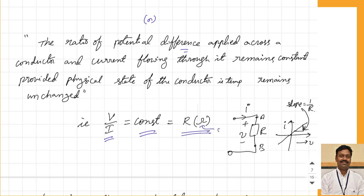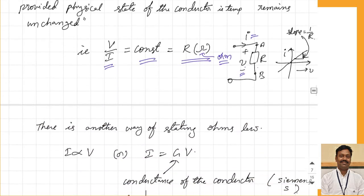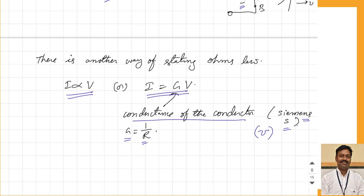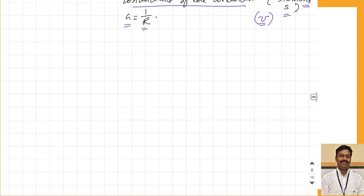He assigned the symbol Ohm to this constant. So if you apply voltage V across a material and current I passes through it, the ratio V by I is constant — meaning the slope of the voltage-current curve is constant. From the first definition, current I equals G times V, where G is the conductance of the material, given in Siemens, and G equals 1 by R.